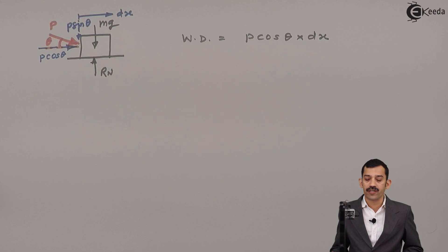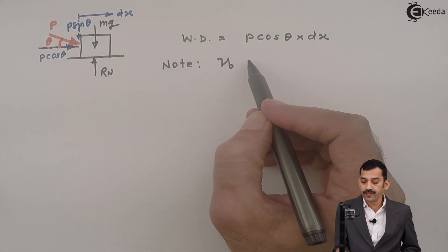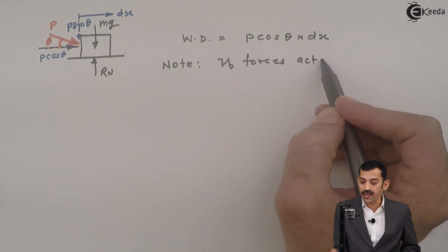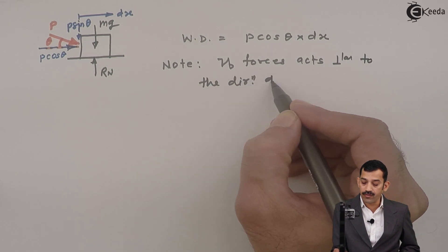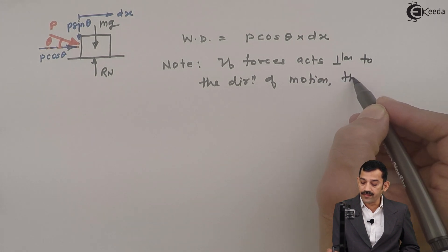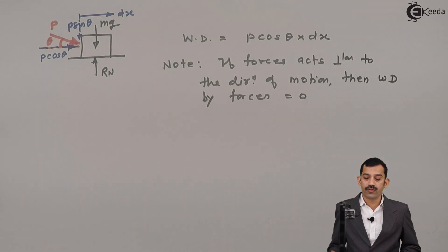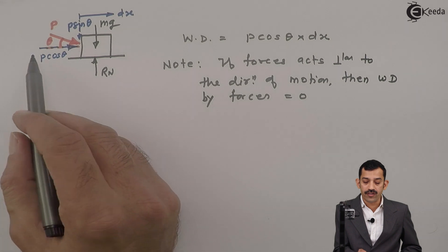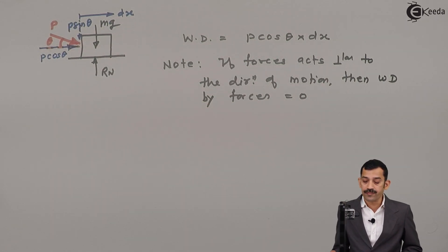Therefore, work done by P·sin θ, mg, and normal reaction is zero, since these forces act perpendicular to the direction of motion. When forces act perpendicular to the direction of motion, work done by those forces equals zero. You must always concentrate on which force acts in the horizontal direction or in the direction of displacement. Therefore, work done is only by P·cos θ, and that work done is positive since the direction of P·cos θ and displacement are the same.